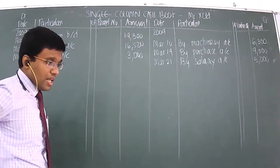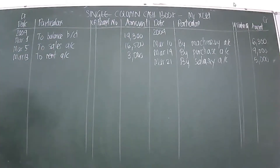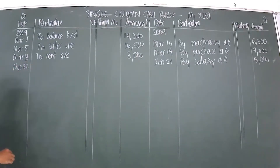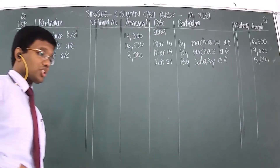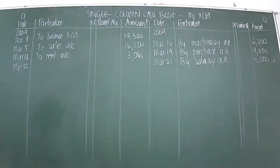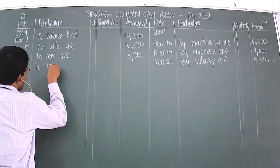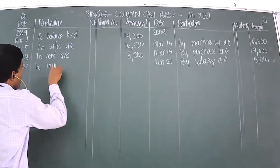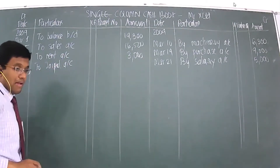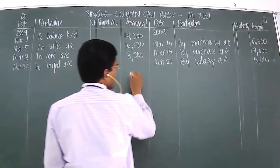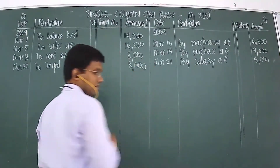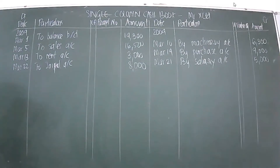March 22nd: cash received from J-pot. When J-pot gives you cash, cash would be coming in. So the entry is on the debit side: To J-pot Account, and the amount is 8,000.